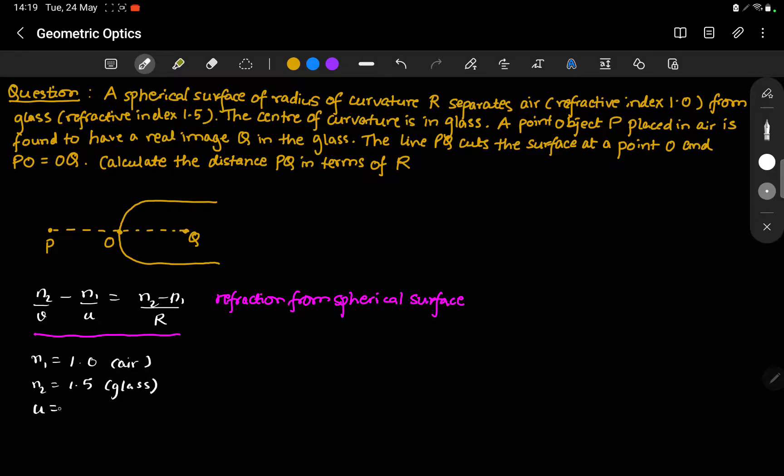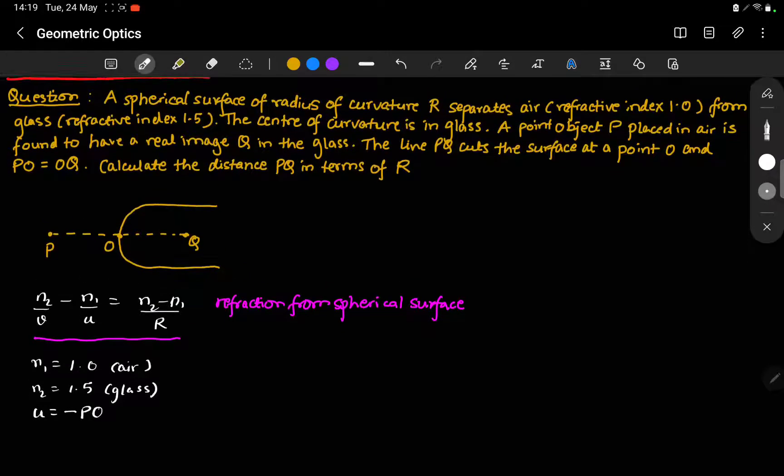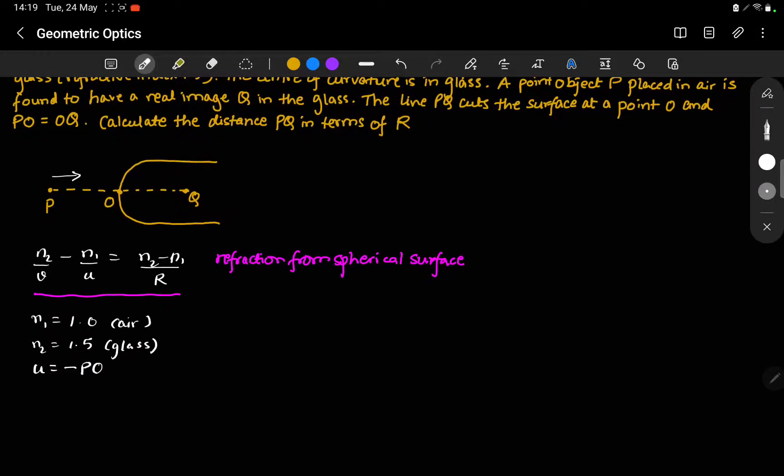U is minus PO. We are using the conventional sign convention. Since the rays would start from here, from the object, this object distance is negative.